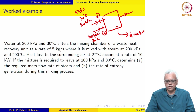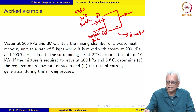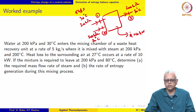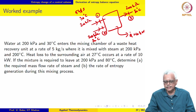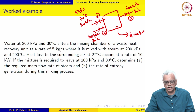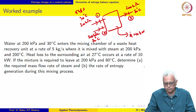If the mixture is required to leave at 200 kPa and 80 degree Celsius — label this as state 3 — then basically the water is heated from 30 degree Celsius to 80 degree Celsius. We are asked to calculate the required mass flow rate of steam and the rate of entropy generation during the mixing process.